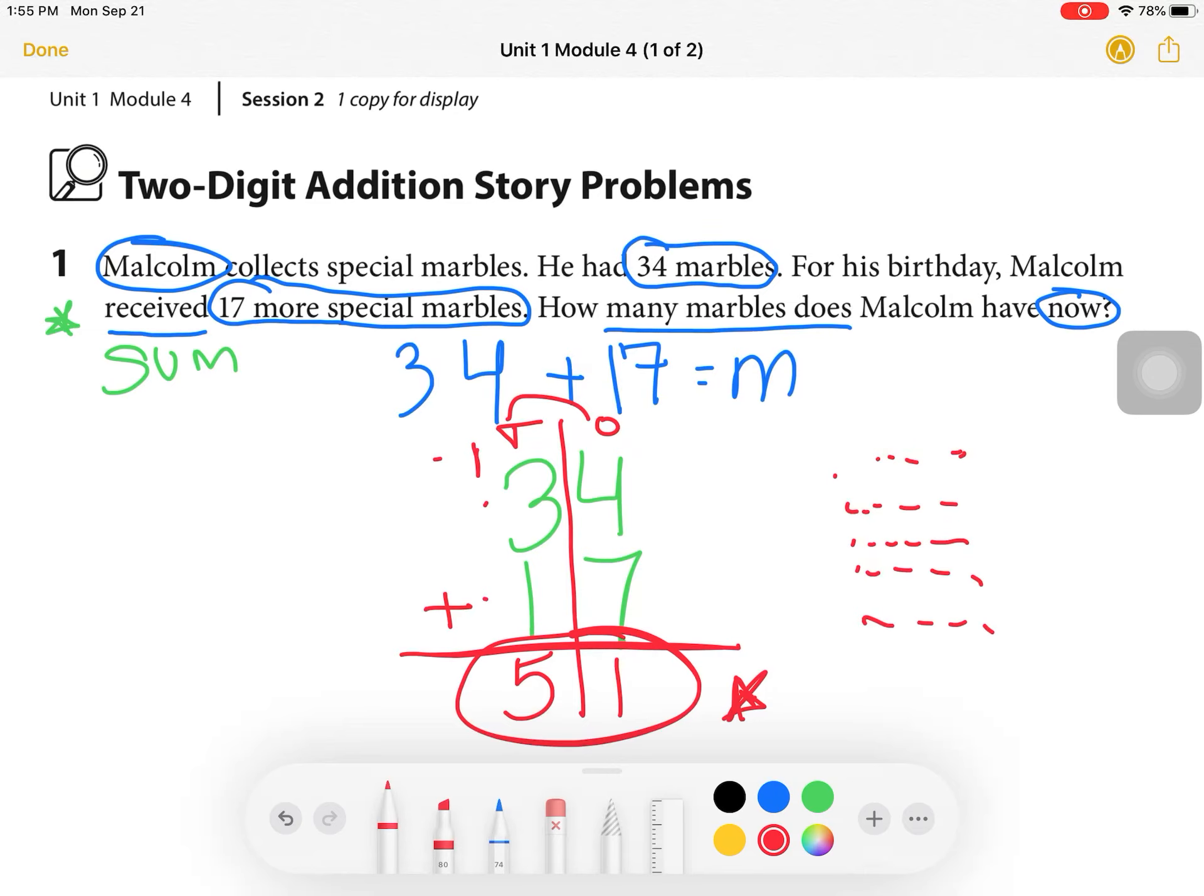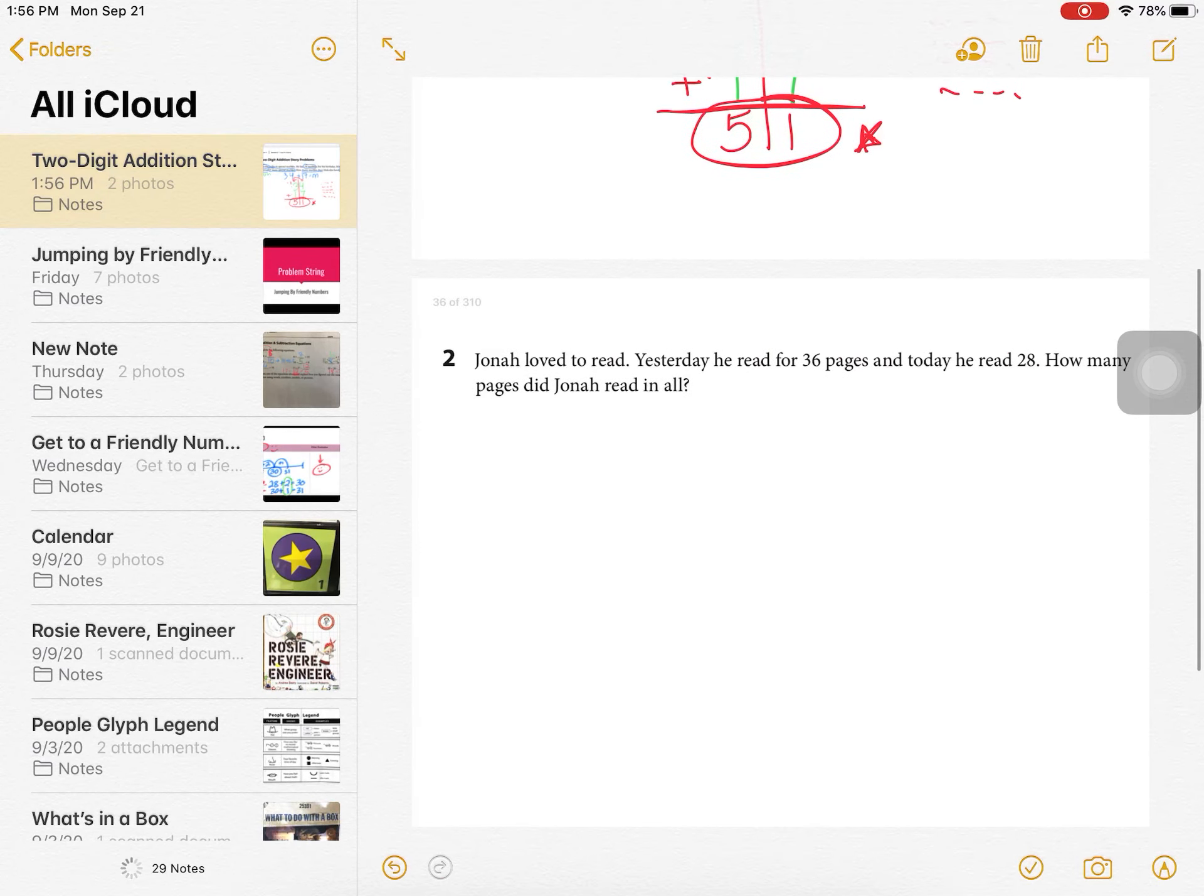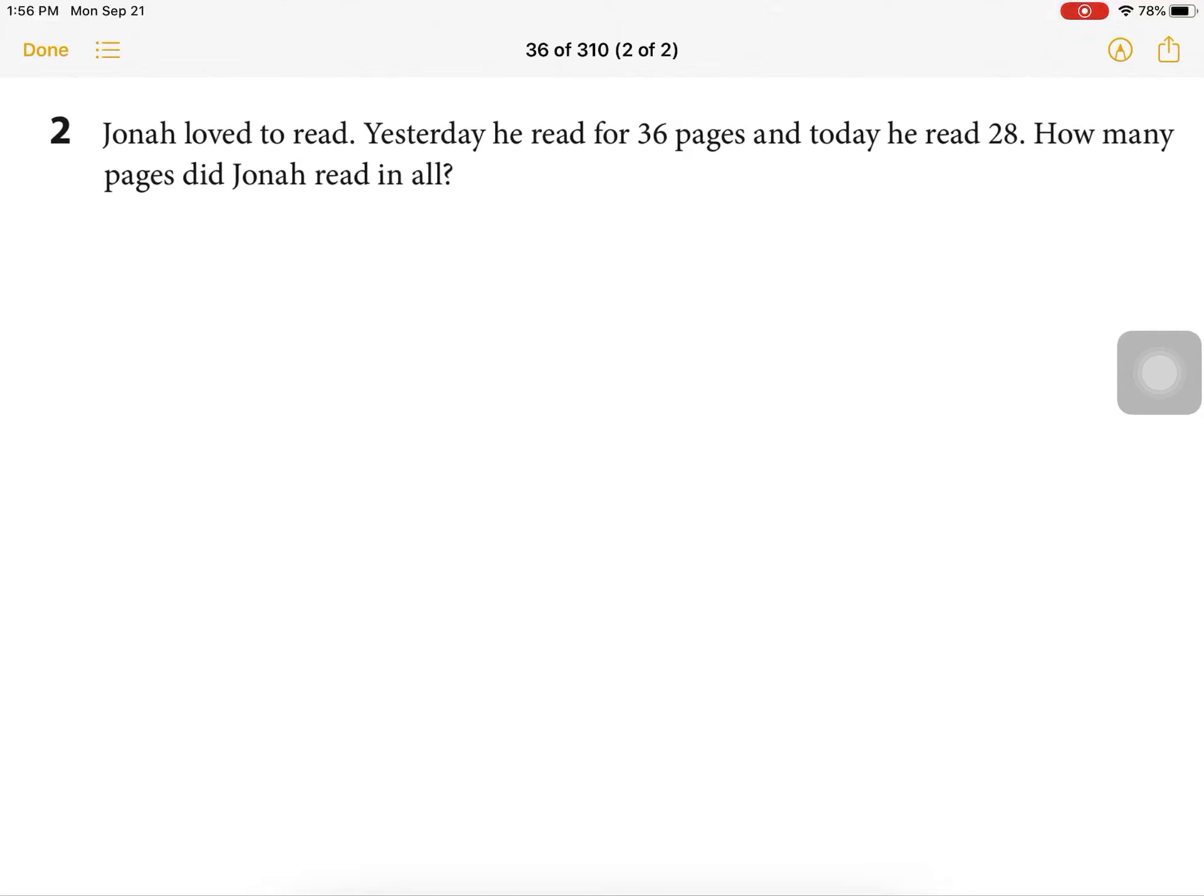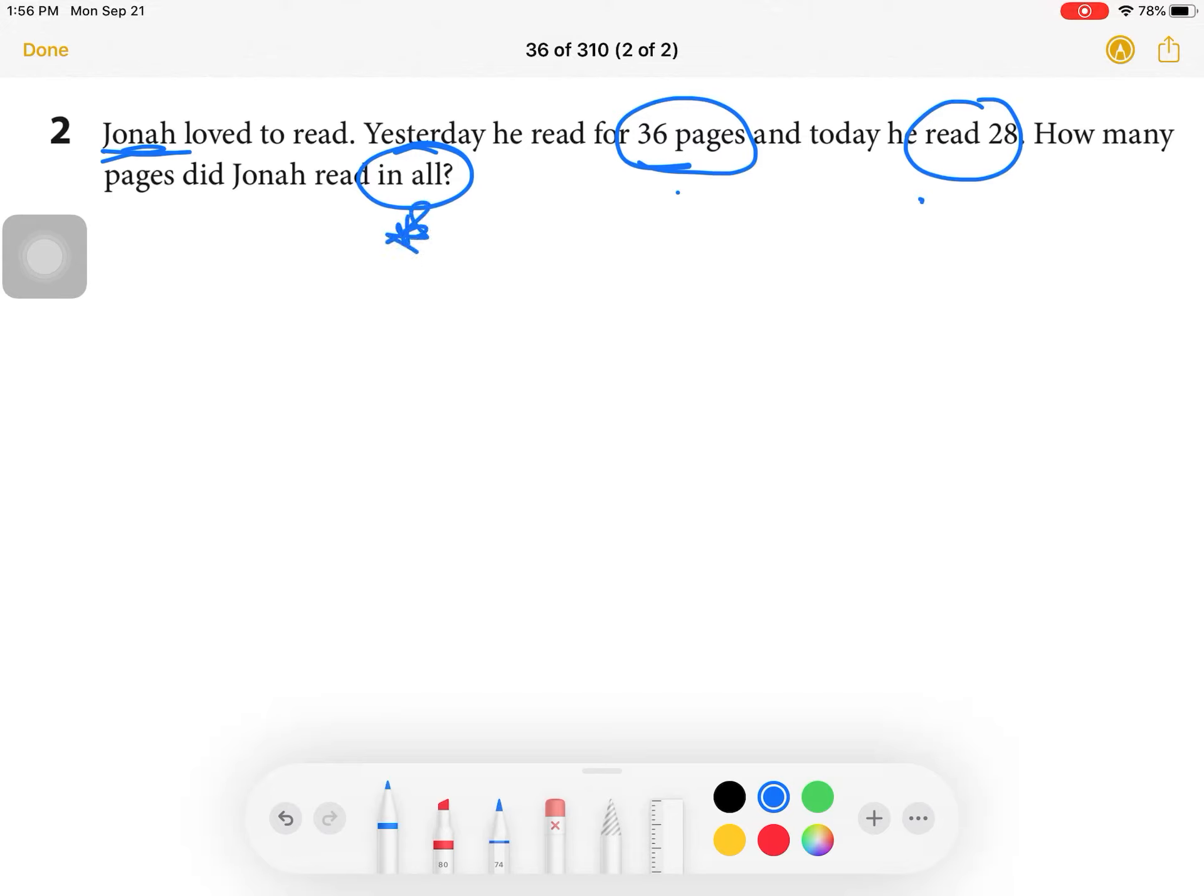So that question for number two, which you're solving today, is Jonah loved to read. Yesterday he read for 36 pages and today he read 28. How many pages did Jonah read in all? There's that word that popped up to me again and I love it so much. It's in all. And we're dealing with the boy named Jonah. And I have a picture of what a Jonah looks in my head. I had one in my class a few years ago. Then we have 36 pages that he read and then he read 28. So I want to know these two numbers together in all.